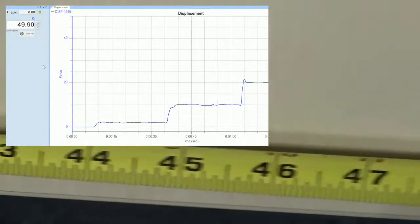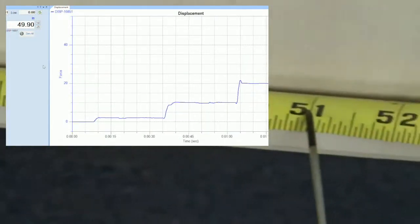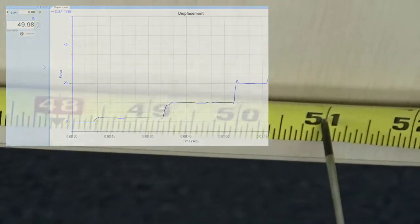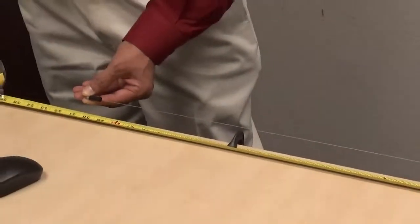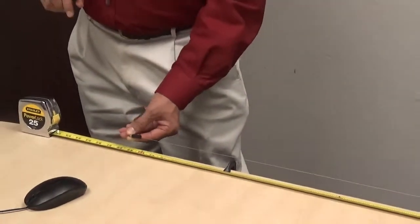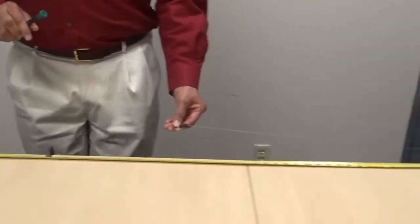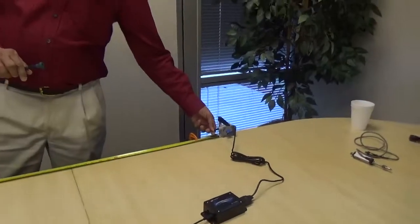And here's 50 inches. It's a 1% device but usually performs much better than 1%. 1% of full scale, so for 50 inches, 1% would be about half an inch, but as you can see it's well within a quarter inch accuracy.